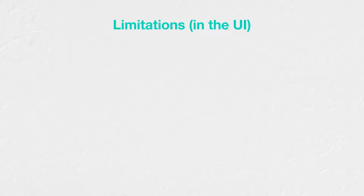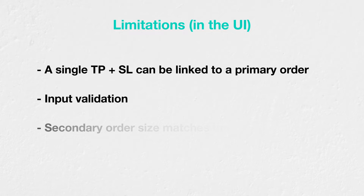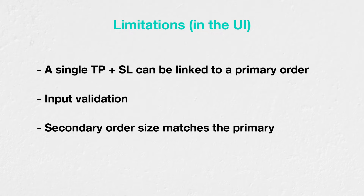In the Deribit website user interface, the possible combinations of conditional orders have been deliberately limited. A single take-profit and stop-loss can be added per primary order. There is also input validation to ensure that prices selected for the secondary orders are on the correct side of the primary order. The size of the secondary orders also always matches that of the primary order. These limitations are there to protect UI traders from entering combinations that are almost certainly bad for the trader.